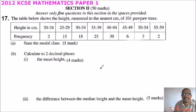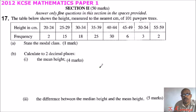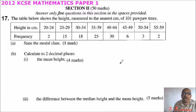This is question number 17, which is the first question in section 2. Section 2 consists of 50 marks — you are given 8 questions and you do 5 of them; each question is 10 marks, so you'll be able to score 50 marks in total. Question number 17 says: the table below shows...